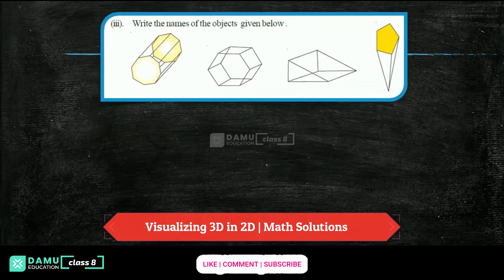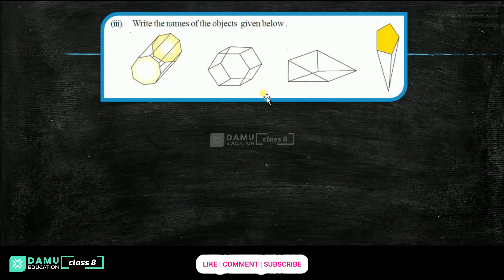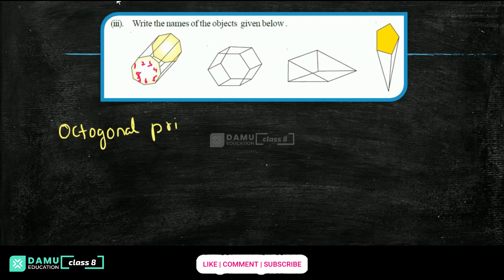Hello viewers, thanks for watching. Our next question is: write the name of the object given below. This face is a prism — it is not joining at a vertex. Pyramid means it will join at one point. Here, how many sides are there? One, two, three, four, five, six, seven, eight. Obviously, it is an octagonal prism.